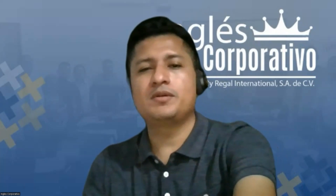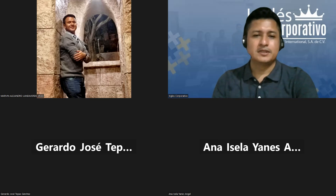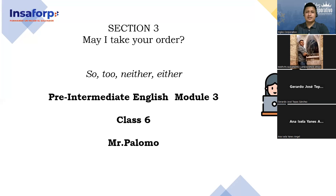Hello everybody, welcome to this English class here on Zoom. Thank you so much for joining — are you ready for today's class? We're going to continue working on something called 'so, neither, and either.' This is pre-intermediate English, module number three, class number six. Welcome!